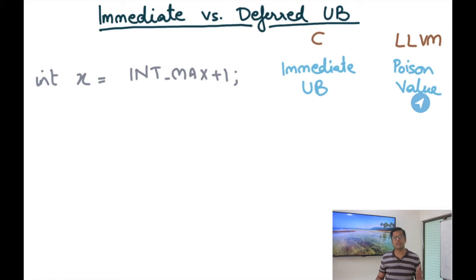And then we looked at an IR like LLVM which uses a poison value to represent the result of such computation and this transfers the poison value to the destination variable x. I should also point out that if I take another example, let's say I do 2 divided by 0, let's say y equals 2 divided by 0, then in this case it will be immediate UB in both cases.